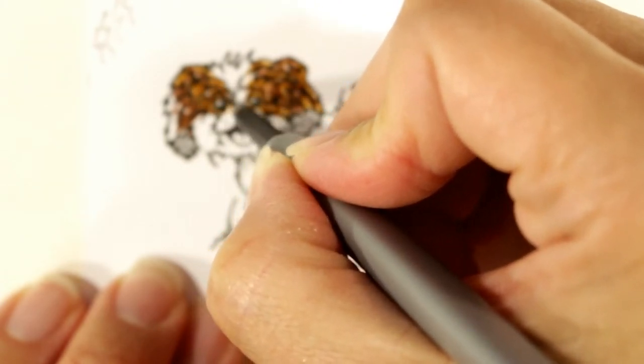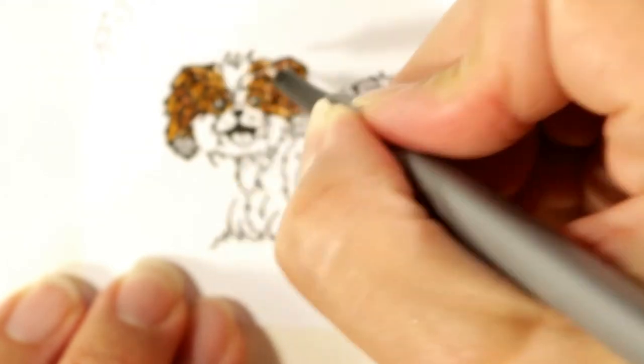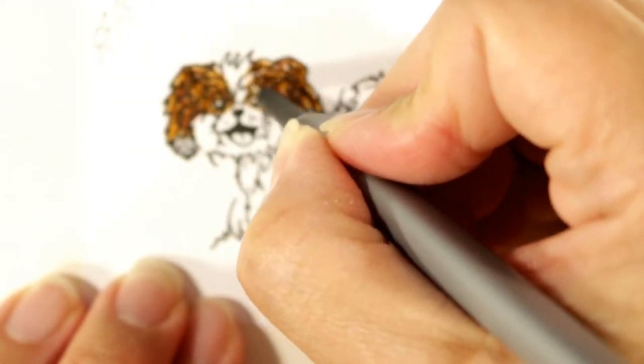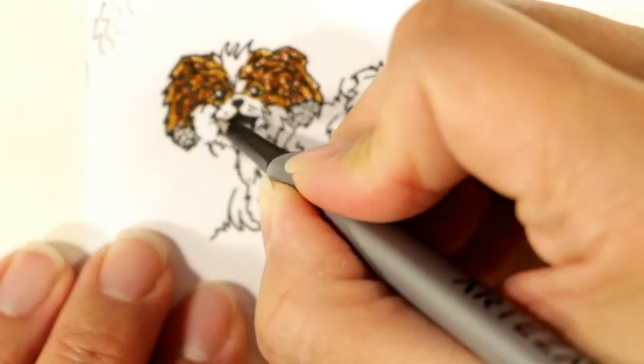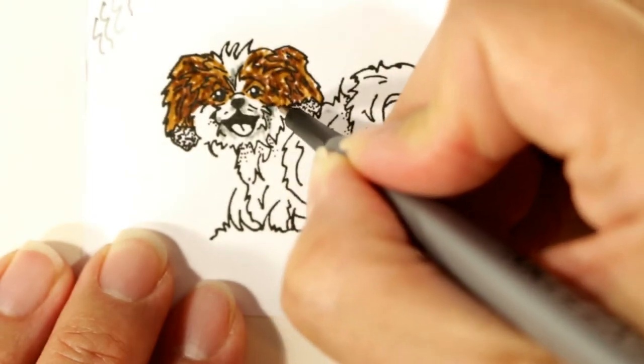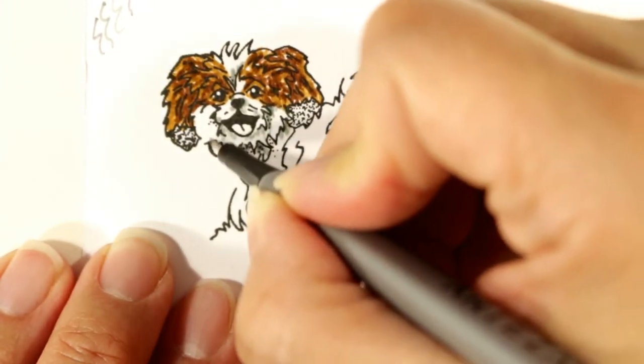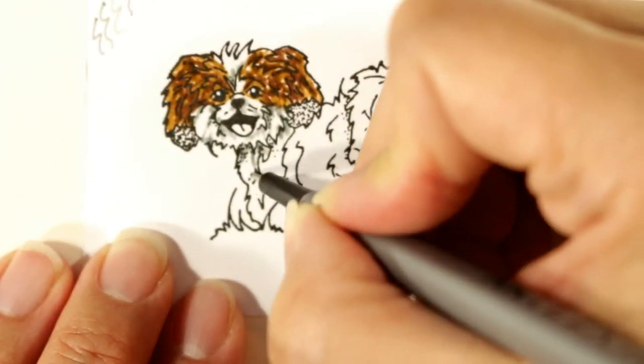Sorry, the camera's focusing on my finger rather than the image at this point. But hopefully it'll come back into focus. I'm just using the brown again and then that tan golden color. And I'm going to add a light gray to the areas that are white in the image just so I can get some shadowed areas and it's not just the stark white of the cardstock.